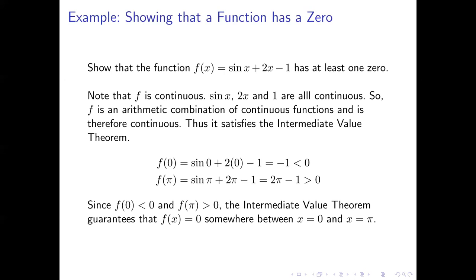So as we let our x values change from zero to π and pass through all the x values in between, our function values go from negative numbers to positive numbers. So the intermediate value theorem guarantees that f(x) must be equal to zero somewhere in between there, somewhere between where x equals zero and where x equals π.